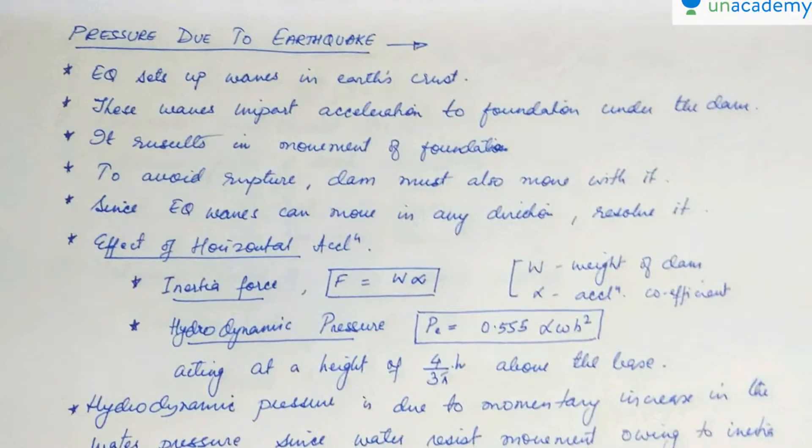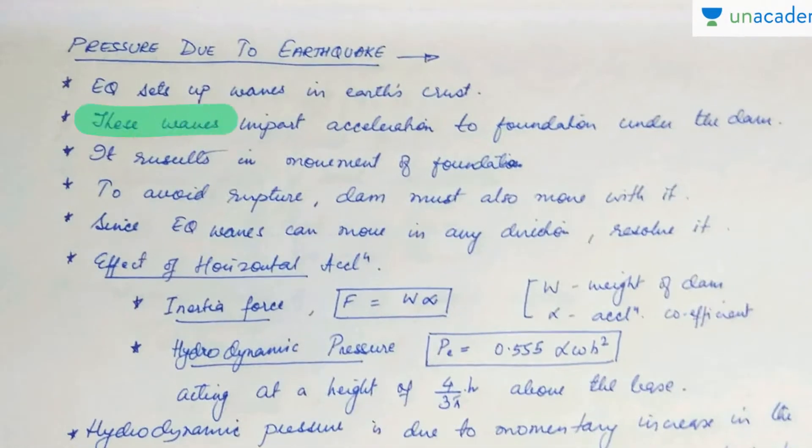Now let's see the pressure that is actually acting on the reservoir because of the earthquake. What happens is that earthquake sets up waves in earth's crust. These waves impart acceleration to foundation under the dam, and this results in movement of your foundation. To avoid rupture, if the foundation is moving, the dam which is actually lying above the foundation must also move with it. And because the earthquake waves can move in any direction, we are going to resolve it in horizontal direction and in vertical directions.